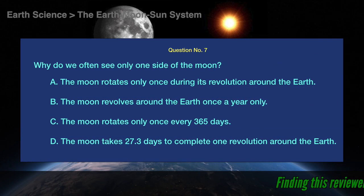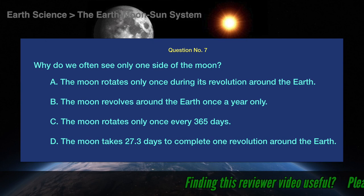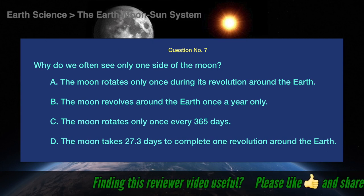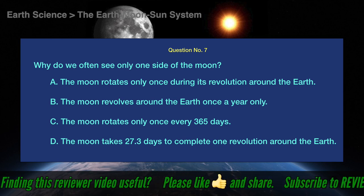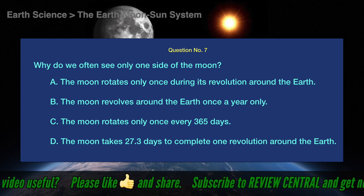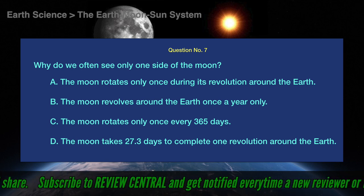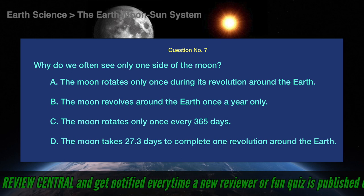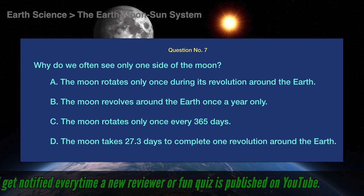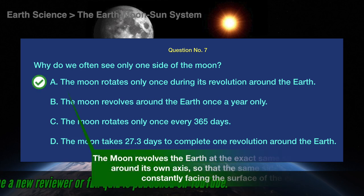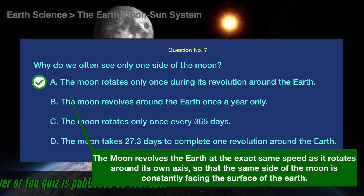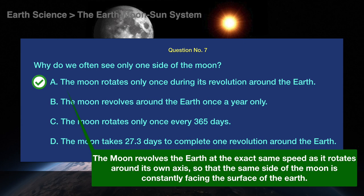Question number 7. Why do we often see only one side of the Moon? The correct answer is A. The Moon rotates only once during its revolution around the Earth, at the exact same speed as it rotates around its own axis, so that the same side of the Moon is constantly facing the surface of the Earth.